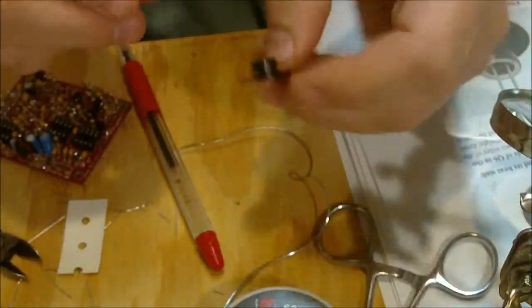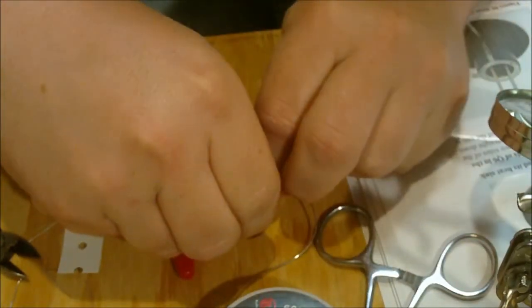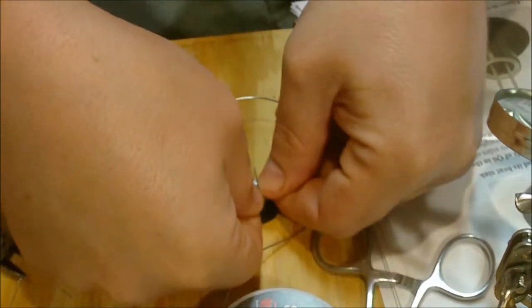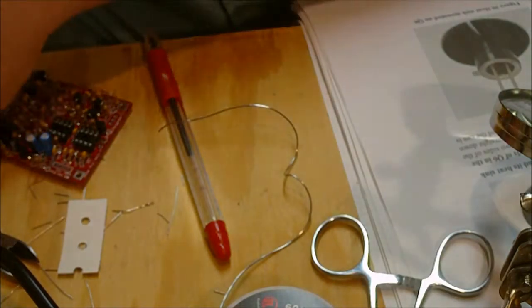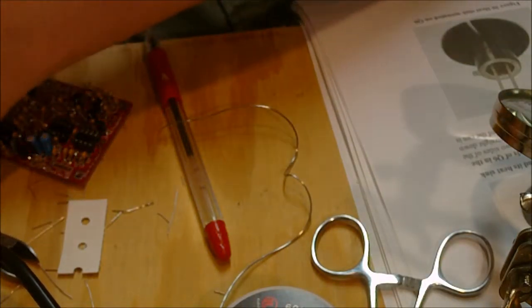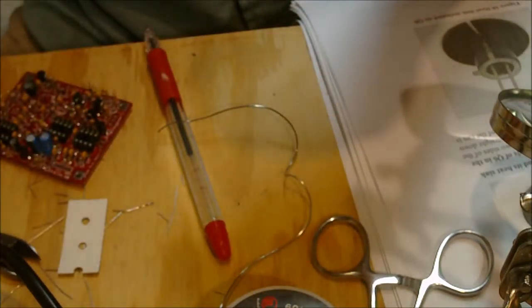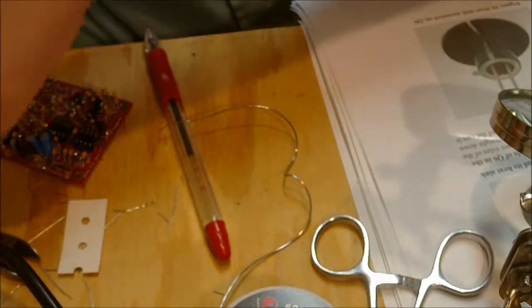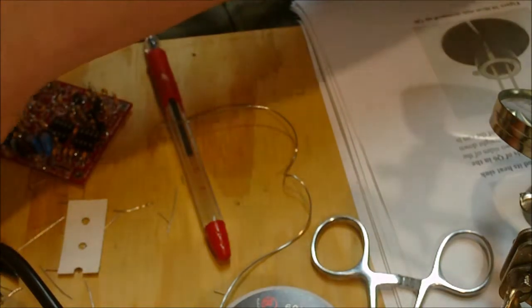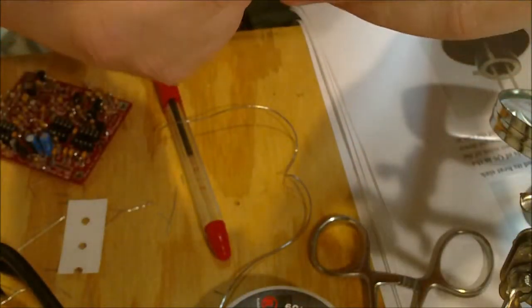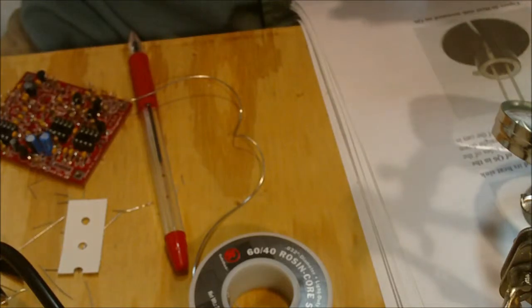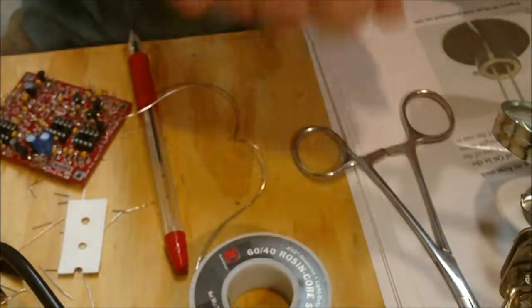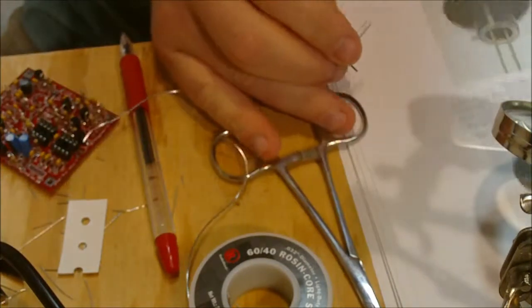And here's the heat sink that I was talking about, this little hat looking thing. So you have to carefully, without ruining the leads, somehow get this on here. There we go. So this is supposed to help dissipate the power. And I bent the lead, but that shouldn't be hard to fix. This is Q6. There we go.